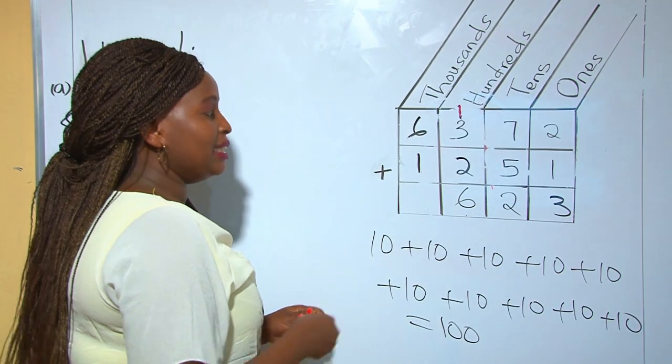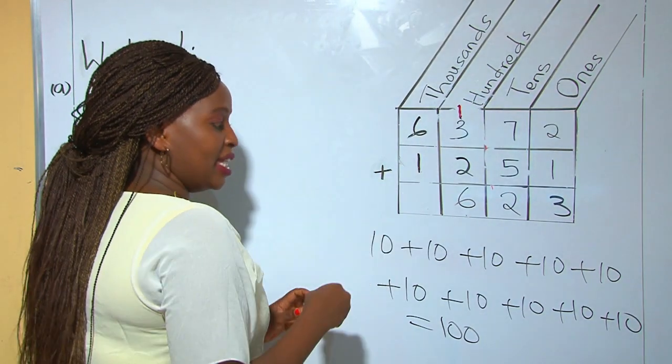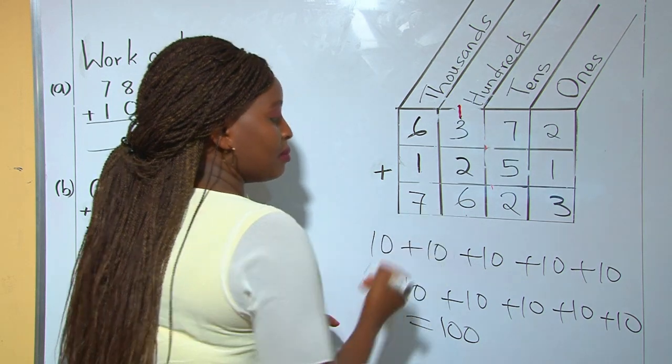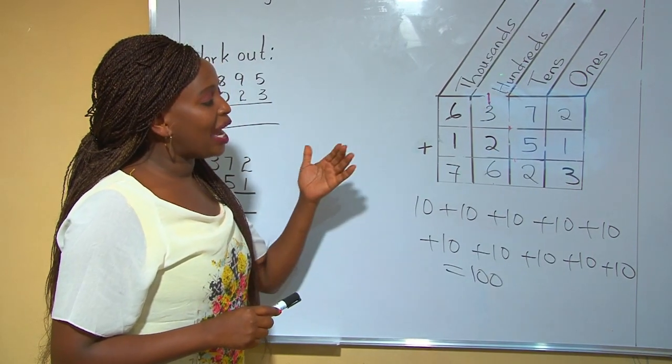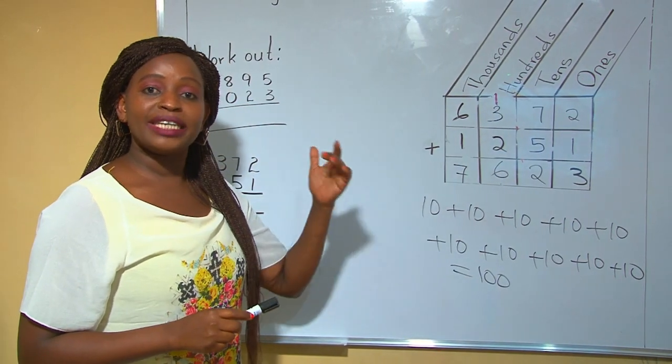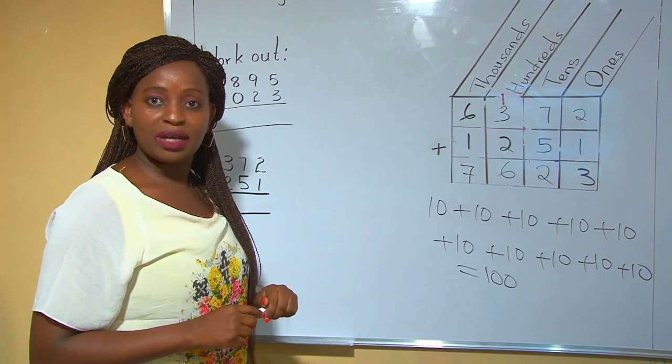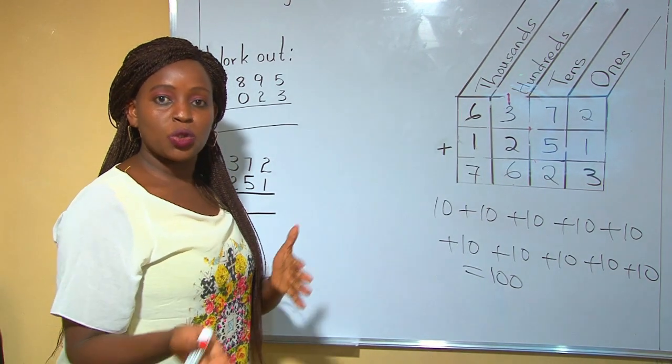We come to the thousands place. 6 plus 1 is 7. Now we understand how to do addition with single regrouping—that is, from tens to hundreds.